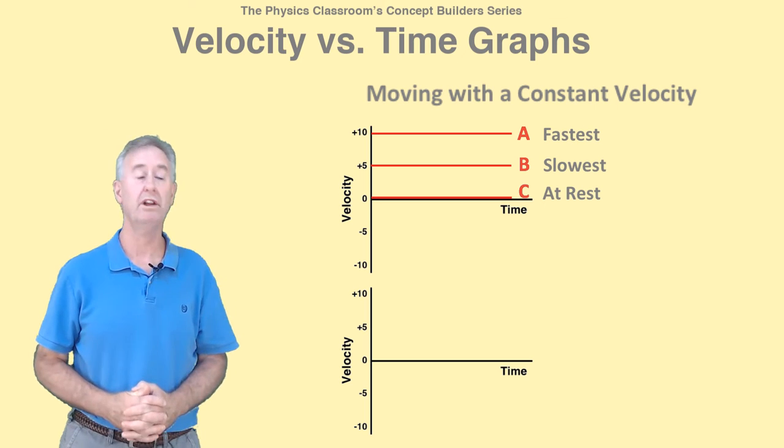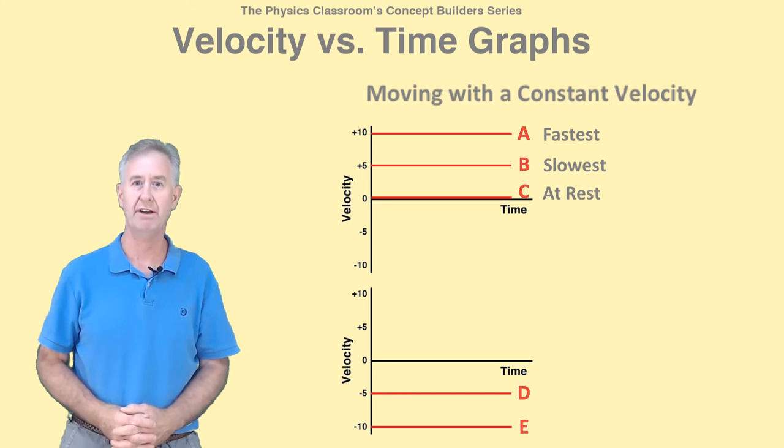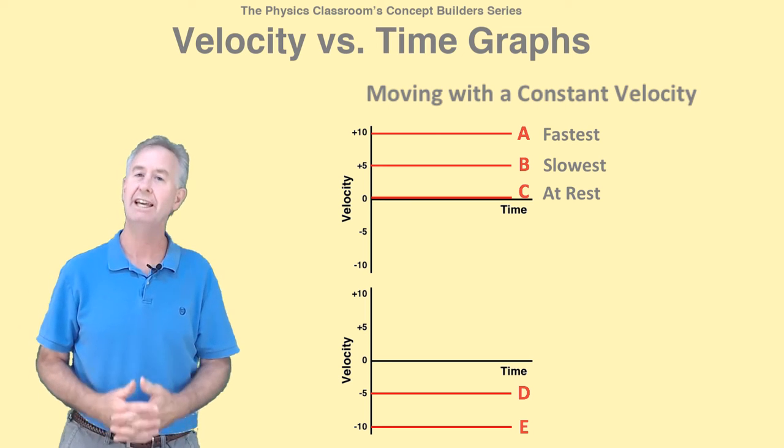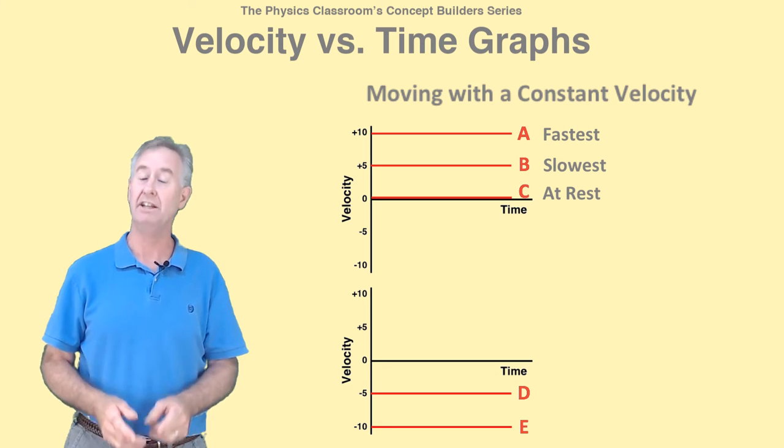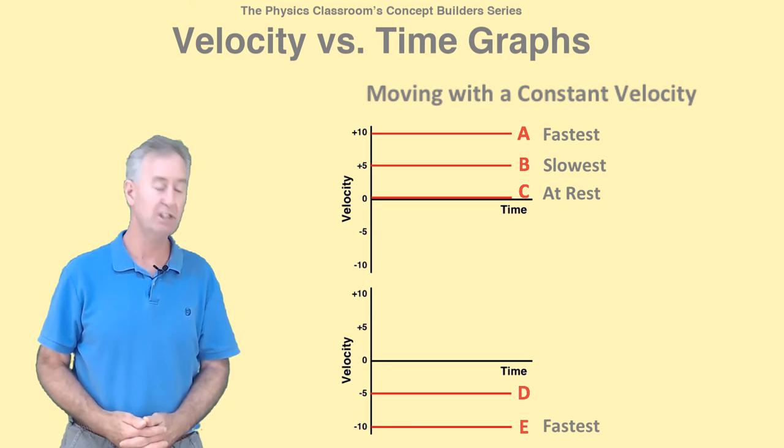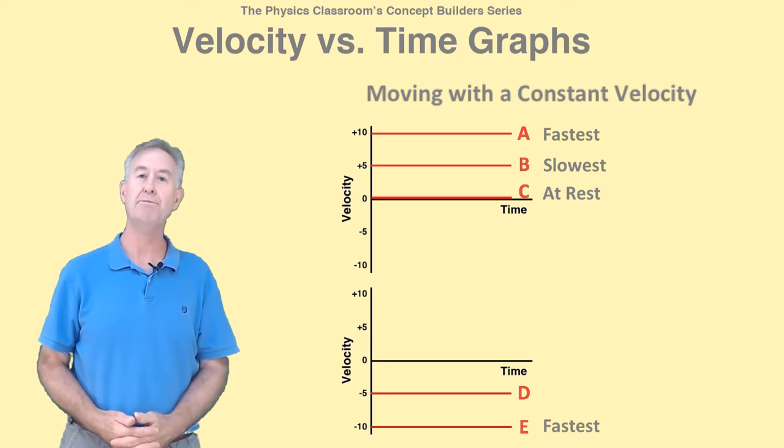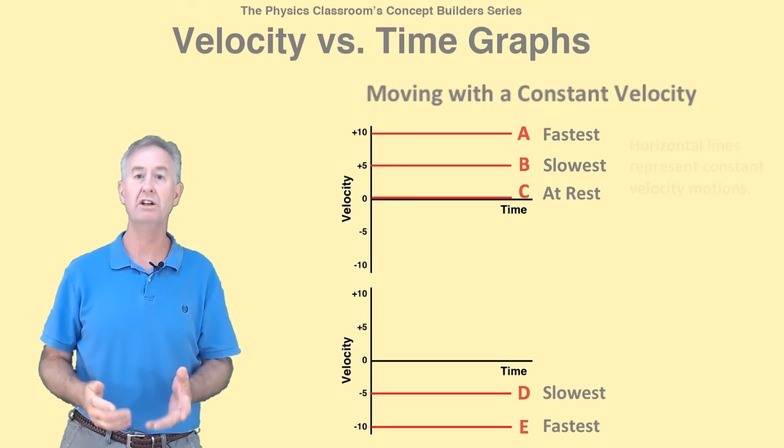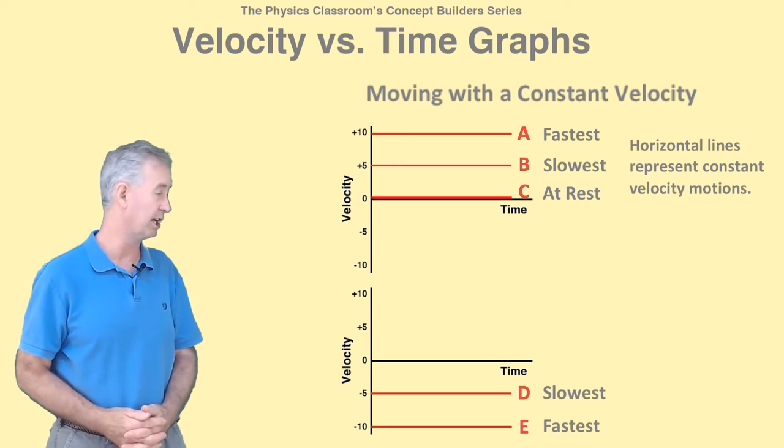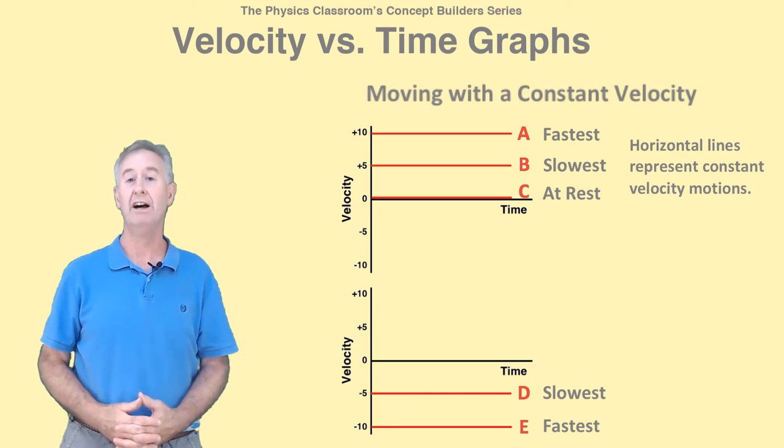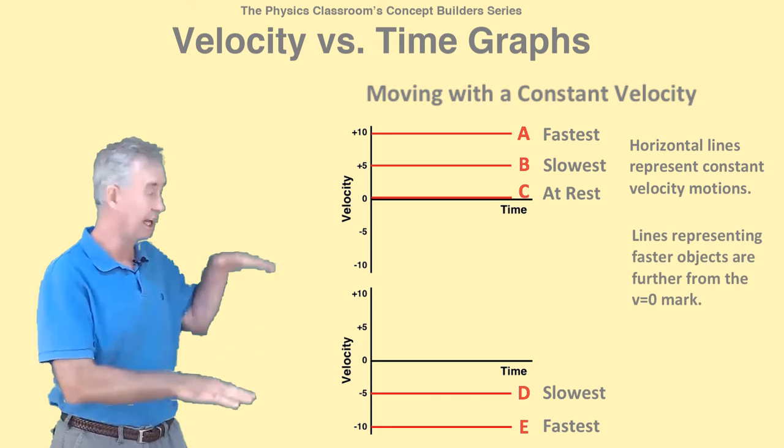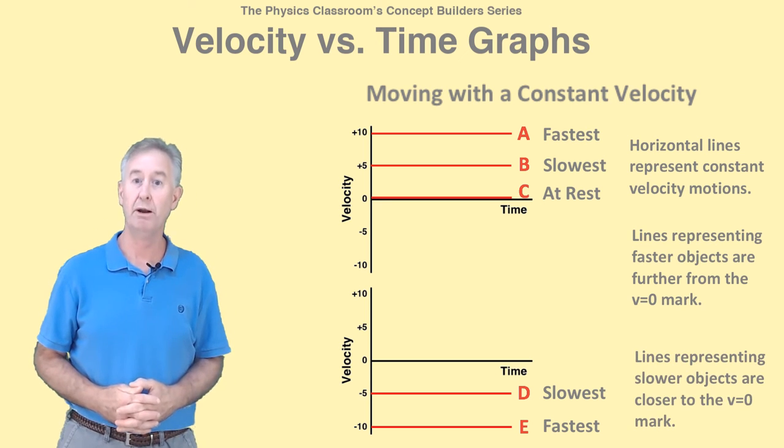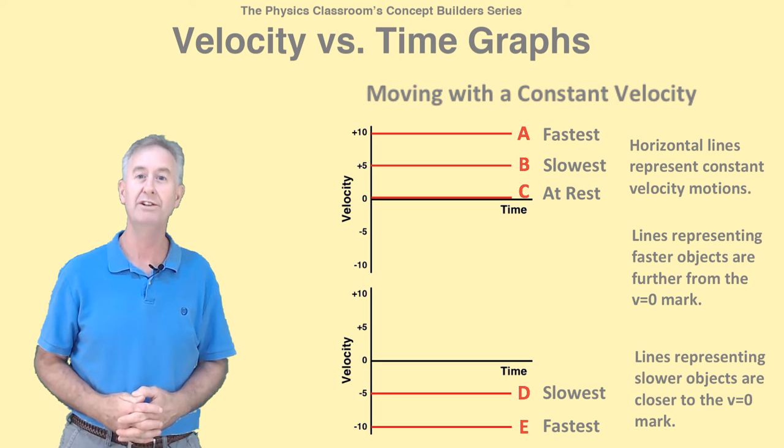You must be careful when the line is in the negative region of the VT graph. Objects D and E are both moving with constant velocity in the negative direction, but object E is the faster object with a speed of 10 meters per second. Object D is only moving 5 meters per second in the negative direction. So in conclusion, horizontal lines on velocity-time graphs represent constant velocity motions. The further that the line is from the V equals zero mark, the faster the object. Slower objects are represented by lines closer to the V equals zero mark.